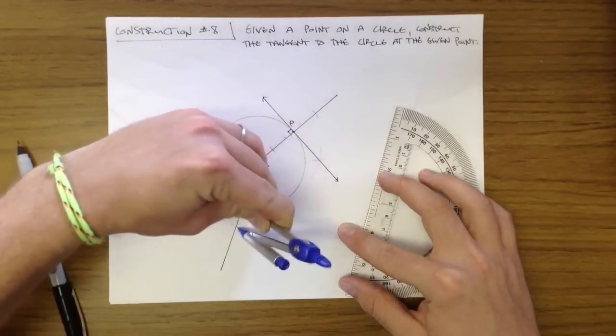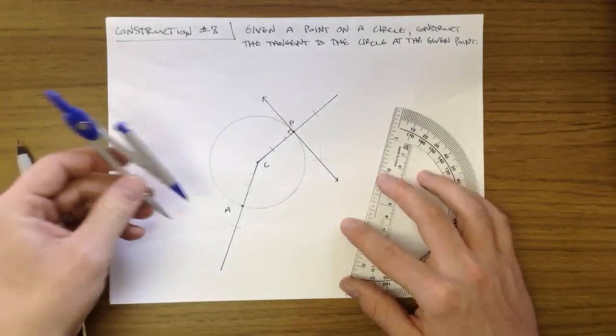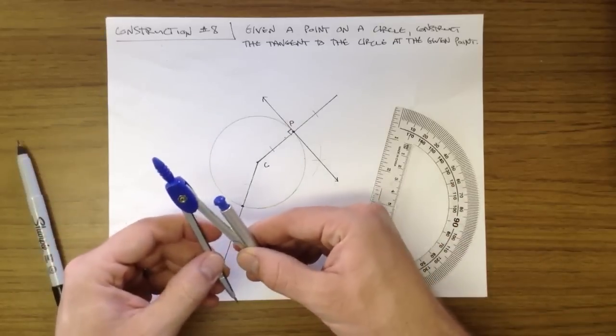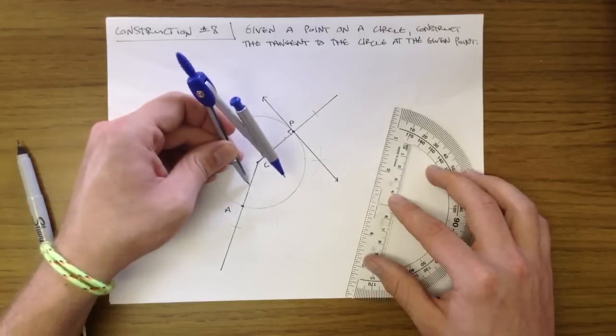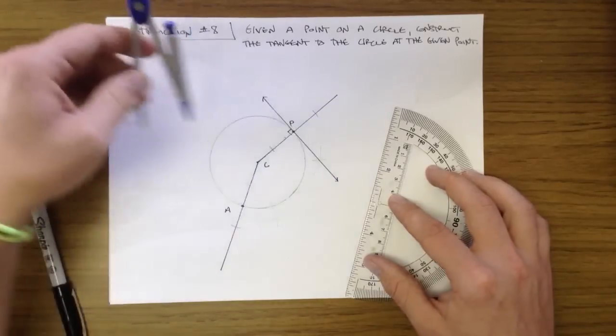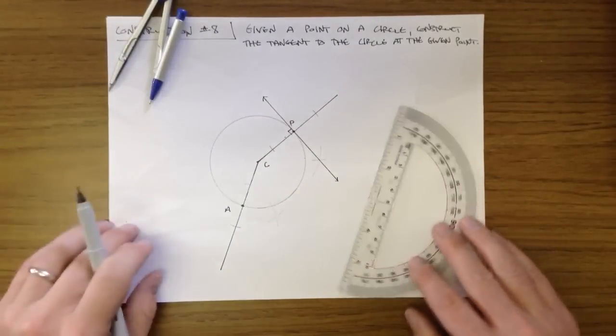we're going to draw two arcs that are the same distance away from A. Now using those intersections of the line and those arcs, find a point that's on the perpendicular bisector.